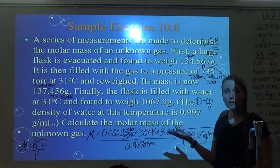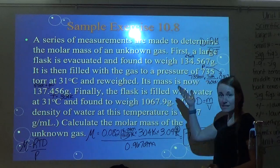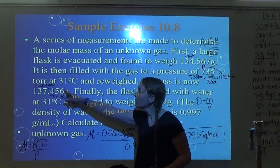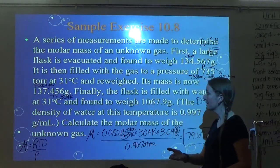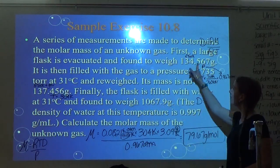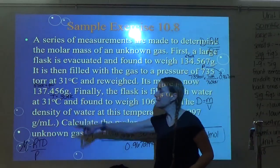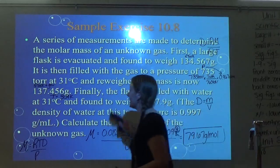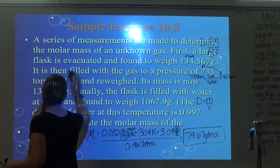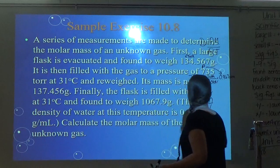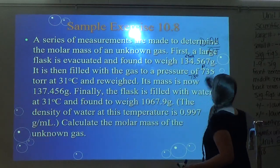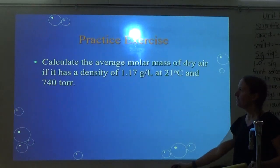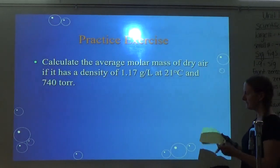The tricky part was that they didn't give us the volume of the flask or the mass of the gas directly. I had to subtract the flask from flask-plus-gas to get the mass of gas, subtract to get the mass of water, use density to get milliliters, then convert to liters. After all that, I could solve for molar mass. Then you get a much easier practice exercise.